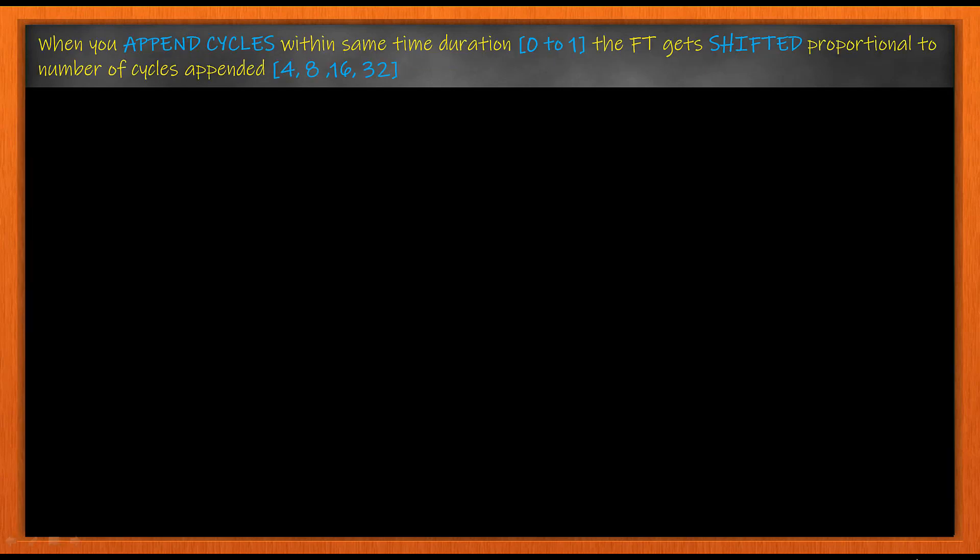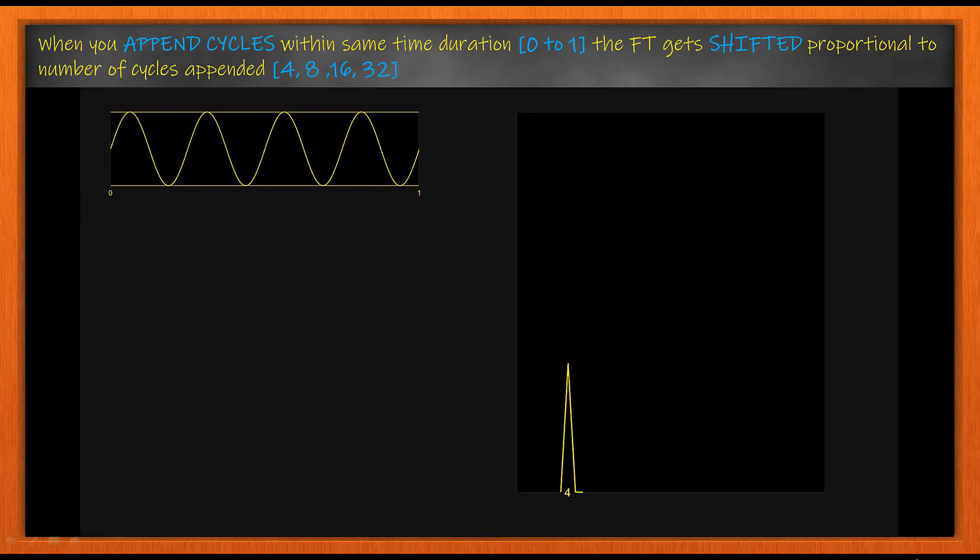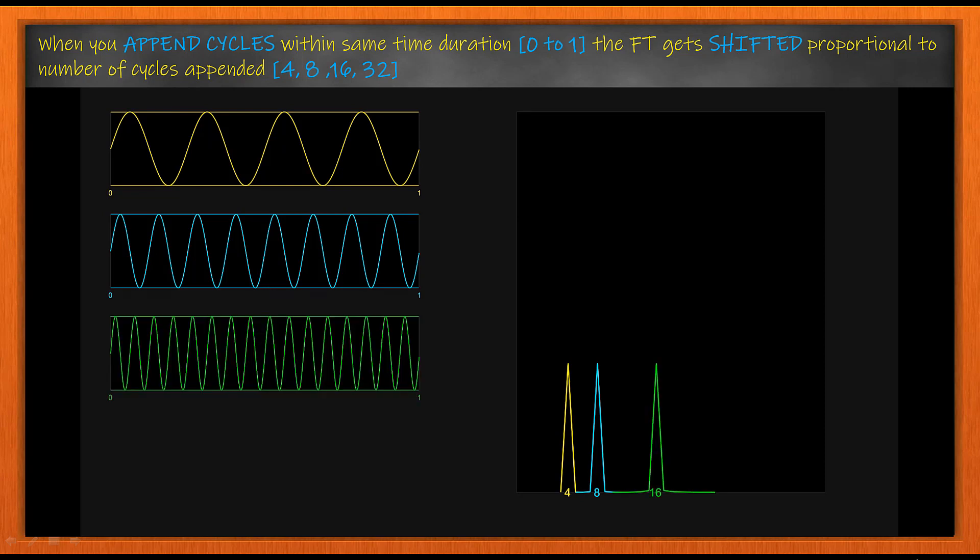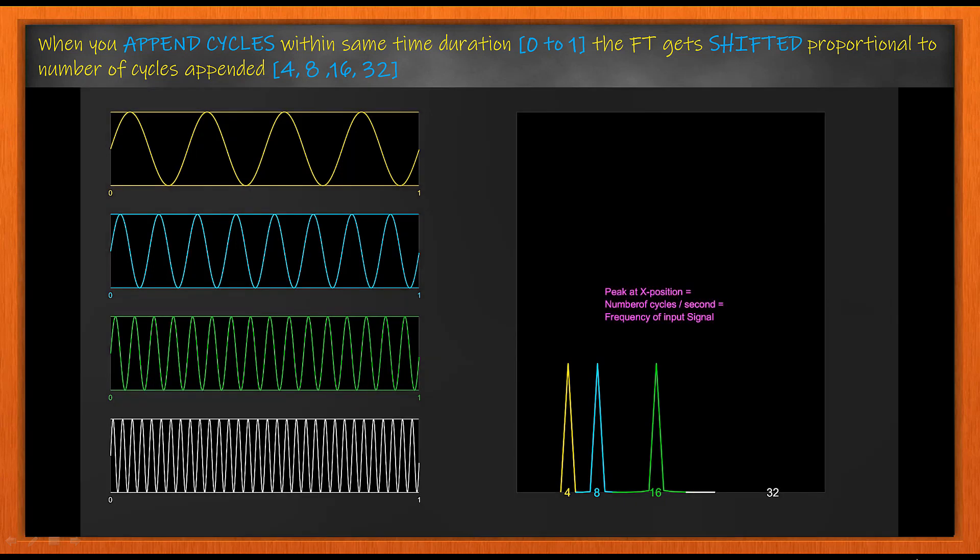Next we have cycle appending, so we add cycles in the same duration 0 to 1 as shown here. As you can see on the right hand side, the Fourier transform gets shifted to places 4, 8, 16 and 32.